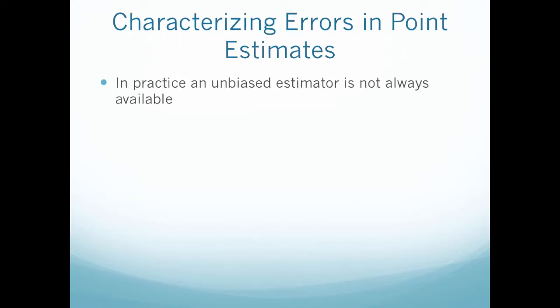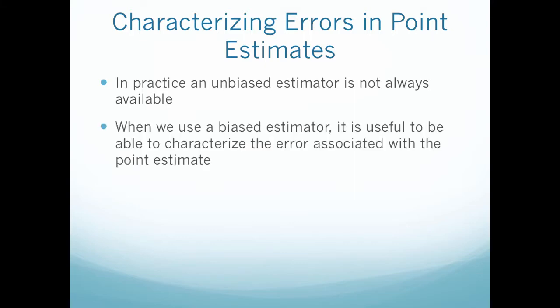In practice, an unbiased estimator is not always available. When we use a biased estimator, it's useful to be able to characterize the error associated with the point estimate. There are different types of errors associated with biased point estimates as well: the standard error and the mean square error.